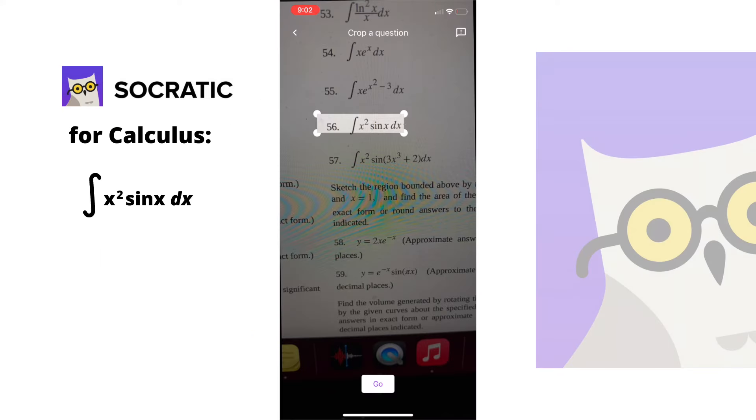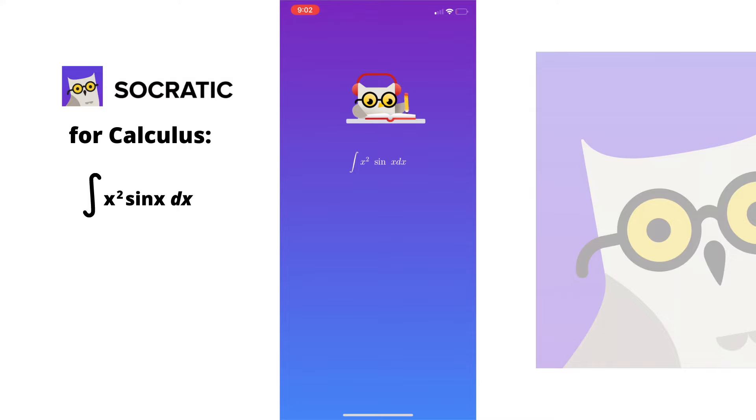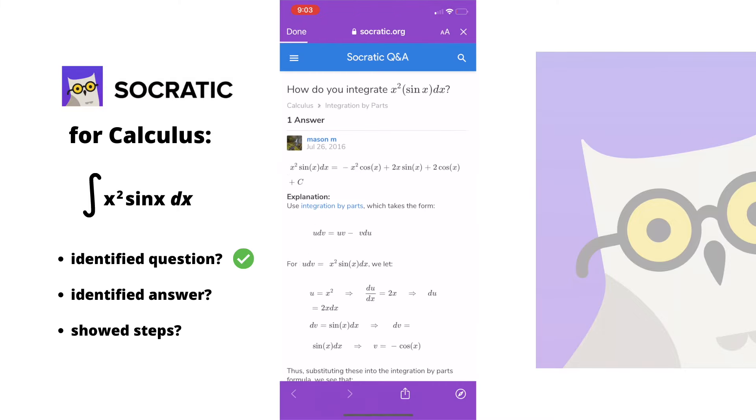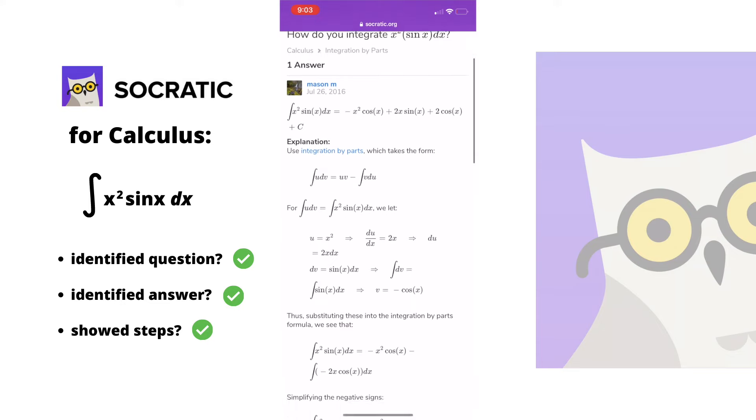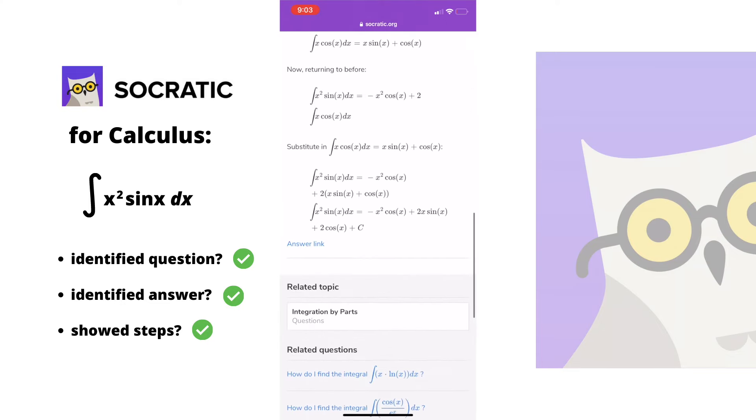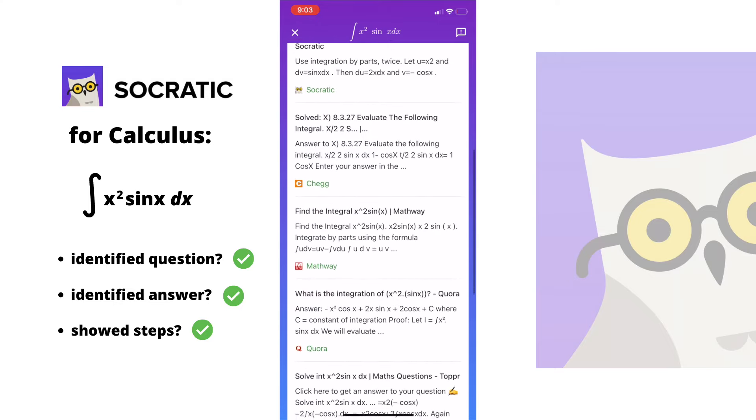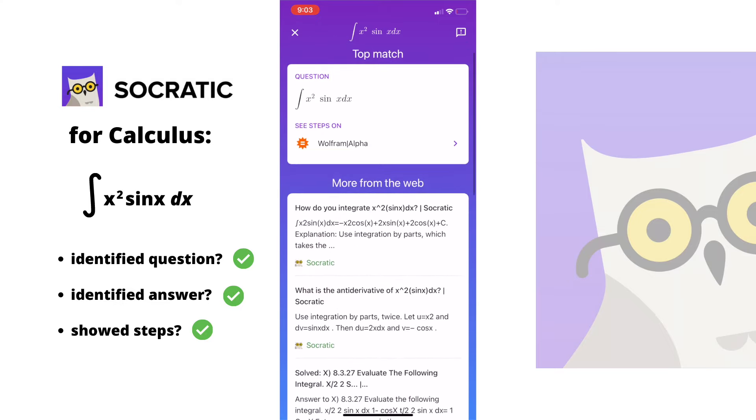For the calc integral, it did something weird where it found the exact problem on a Socratic forum, which was a Socratic user's response that showed the complete solution and was super clear. So I guess it did work. Is this cheating? But at least it searched for the answer and the solution and the steps to get there, which is what we wanted at the end of the day.